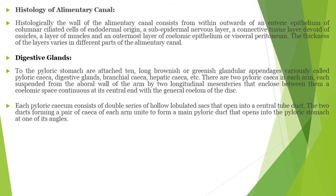Histologically, the wall of the alimentary canal consists of, from within outward: an inner epithelium of columnar ciliated cells of endodermal origin, a sub-epidermal nervous layer, and a connective tissue layer devoid of ossicles. The digestive gland, which we call the pyloric seca, is greenish in color and lobulated.